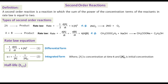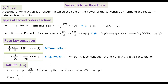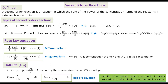For the half-life of a second order reaction, at t = t½, A = A₀/2. Putting these values into the integrated rate equation, we get K·t½ = 2/A₀ − 1/A₀, or t½ = 1/(K·A₀). This is the half-life equation for the second order reaction. From this equation we can say that the half-life of a second order reaction is inversely proportional to the initial concentration of the reactant.